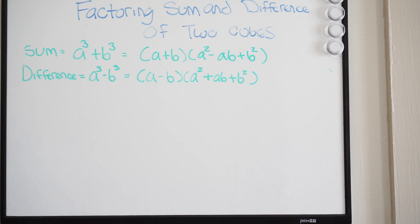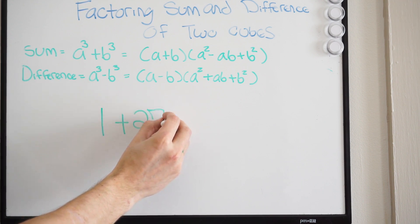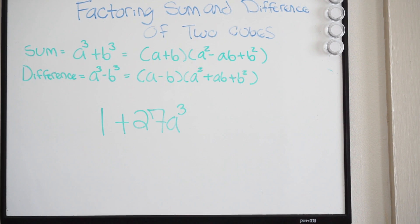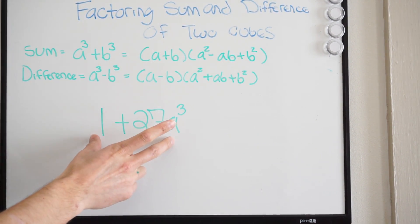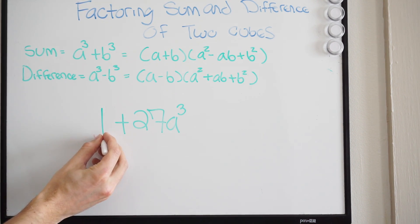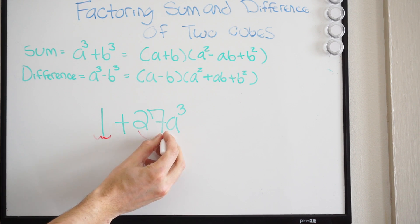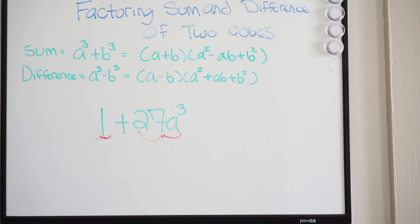So let's go ahead and look at the first problem we're going to talk about. We're going to use 1 plus 27a cubed. Now, when trying to factor using the sum of two cubes, the first step you should do is ask: can we pull out a common term here? And the answer here is no — we can't pull out a common term. Also, let's identify both our a and our b term. This one is acting like my a term, and this 27a is acting like my b term.